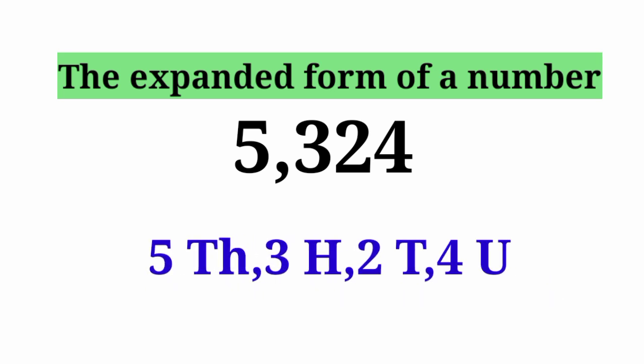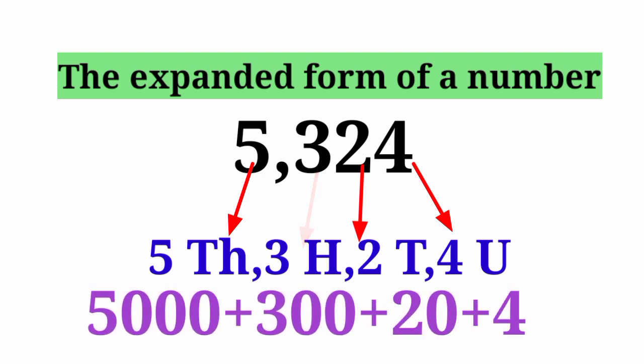5,324 means 5 thousands, 3 hundreds, 2 tens and 4 units. It means that the expanded form of 5,324 is 5,000 plus 300 plus 20 plus 4.